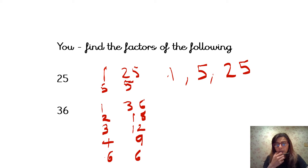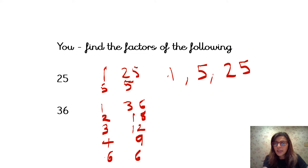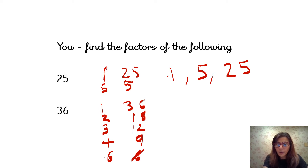Now let's look at the number 36. The factors are: 1 and 36 (because 1 times 36), 2 and 18, 3 and 12, 4 and 9, and 6 and 6 — so we do not need to put the repeated 6. So all those others are the factors of 36.